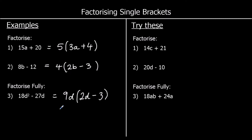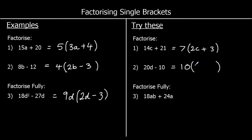OK, 3 for you to try. Pause the video and give them a go. Question 1: 14c plus 21 — 14 and 21 are both in the 7 times table, so we can take 7 outside the brackets. 7 times 2c makes 14c and 7 times 3 makes 21. Question 2: 20 and 10 are both in the 10 times table, so 10 can come outside. 10 times 2d makes 20d, and 10 times negative 1 makes negative 10. So it's 2d minus 1.